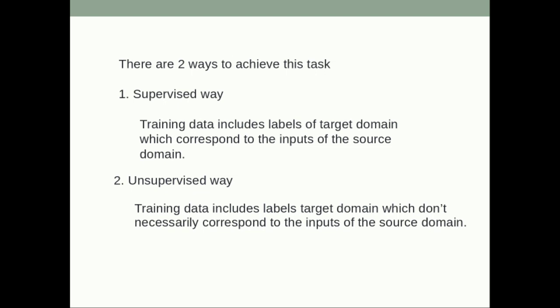There are two ways to achieve this task. The first is the supervised way, but in this task we don't really follow the supervised way because it requires a labeled dataset — meaning corresponding image pairs from domain X to domain Y. In reality it's really hard to get those corresponding labels, so we use the unsupervised way, which is what CycleGAN does. In the unsupervised way we don't need corresponding labels; we can have one set of selfies and another set of anime images.